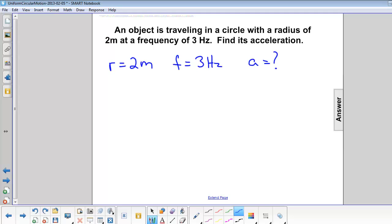First, we need to find velocity. V equals 2 pi r f will give us velocity. 2 pi times our radius of 2 meters times the frequency of 3 hertz is 37.7. And we have meters times hertz is meters per second.